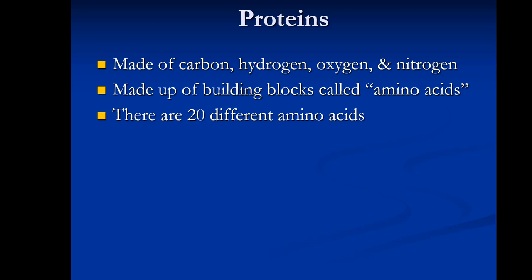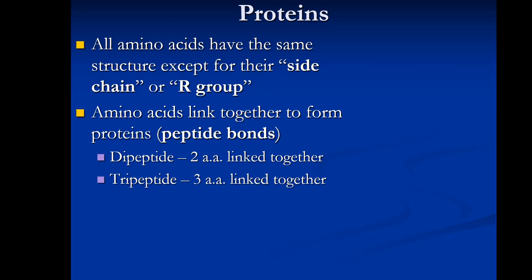Proteins are made up of carbon, hydrogen, oxygen, and nitrogen — nitrogen makes proteins different from fats or carbohydrates. Proteins are made up of building blocks called amino acids. There are 20 naturally occurring amino acids that link together in different orders and shapes to form different proteins, connected via peptide bonds. Two amino acids linked together form a dipeptide, three a tripeptide, and larger chains are simply called proteins.